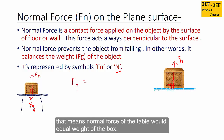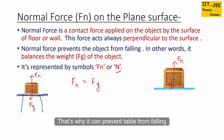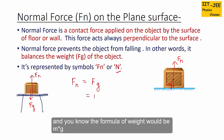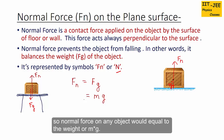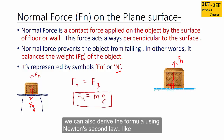Normal force of the table equals the weight of the box, which is why it prevents the box from falling. The formula of weight is mg, so the normal force on any object equals the weight, or mg.